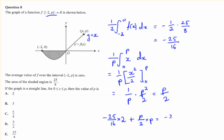So that gives us negative 25 over 8 plus p squared on 2 equals 0. And we can solve for p now. We know that p squared over 2 equals 25 over 8. So p squared equals 25 over 4. We multiply both sides by 2. So p is 5 over 2.